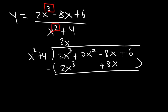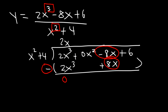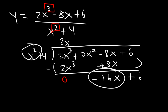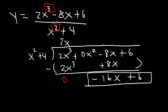Now subtract: 2x cubed minus 2x cubed equals 0, and negative 8x minus positive 8x is negative 16x. Bring down the 6. We can't divide negative 16x by x squared, so that is the remainder — we don't need to worry about it. The slant asymptote is simply y equals 2x.